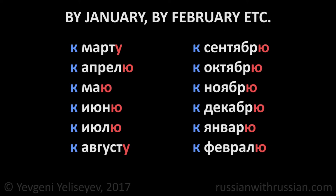The names of the spring and summer months don't change the stress. К марту – by March, к апрелю – by April, к маю, к июню, к июлю, к августу.